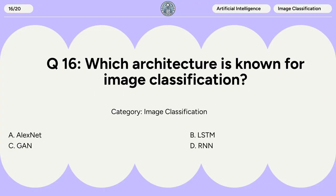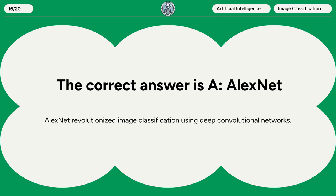Question 16. Which architecture is known for image classification? A. AlexNet. B. LSTM. C. GAN. D. RNN. The correct answer is A: AlexNet. AlexNet revolutionized image classification using deep convolutional networks.